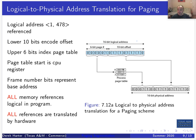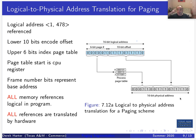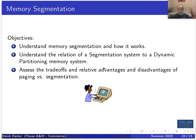The page table start is stored in a CPU register. The operating system is responsible for ensuring that register correctly points to the page table of the process about to run. The frame number bits represent the base address. A logical address consists of a page number and an offset, and all references are translated at run time in hardware - every memory read or write goes through this translation to produce the physical address.